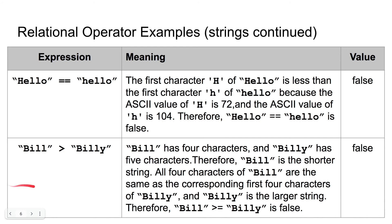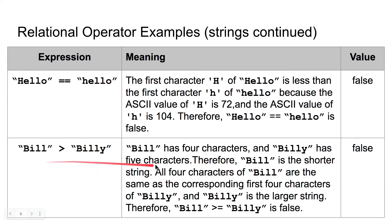Let us look at the example with "Bill" and "Billy". Bill has four characters and Billy has five characters, so Bill is the shorter string. All four characters of Bill — B, I, L, L — are the same as the corresponding first four characters of Billy, and Billy is the larger string. Therefore, Bill cannot be greater than or equal to Billy because Bill is smaller than Billy. So this expression is false.